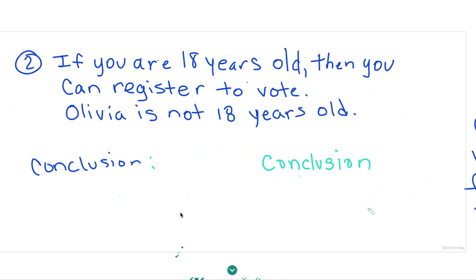If you are 18 years old, then you can register to vote. So if you are 18 years old, that's my hypothesis, that's my P, then you can register to vote, that's my Q. So if P is true, then Q is true.